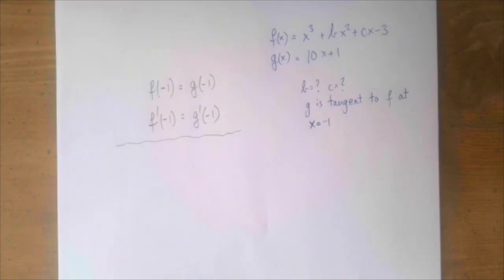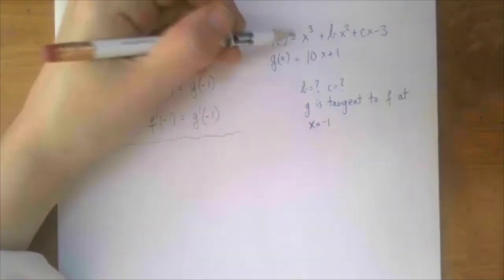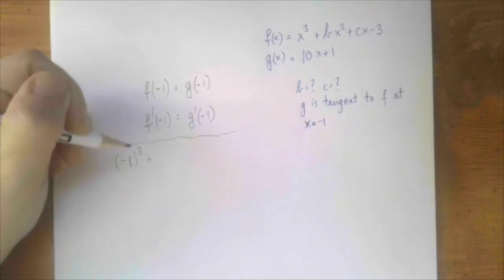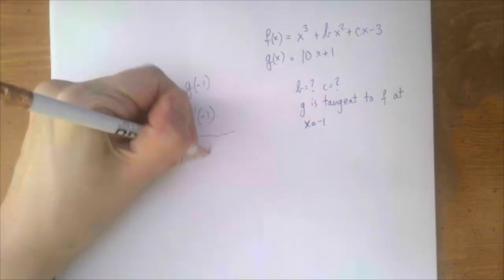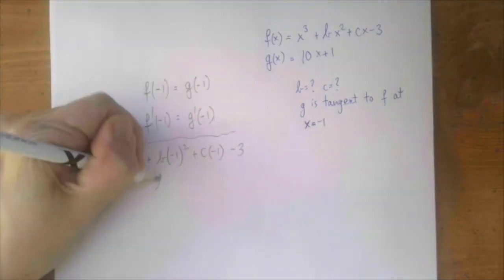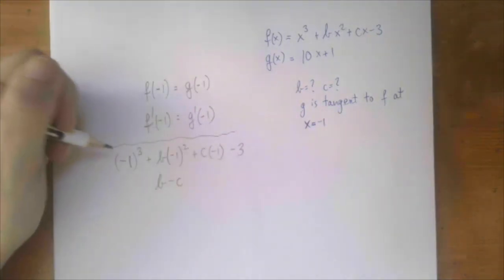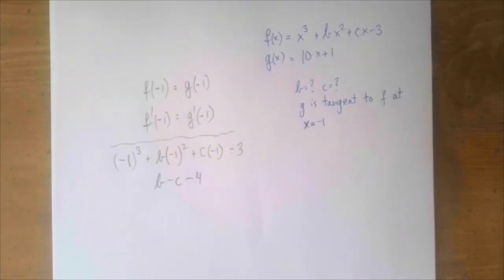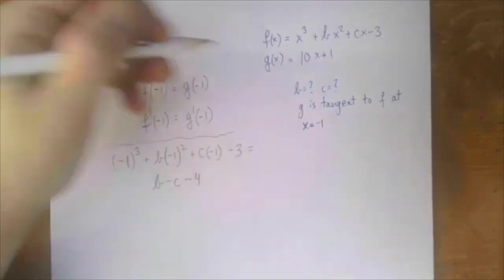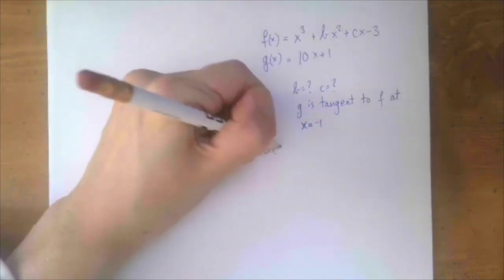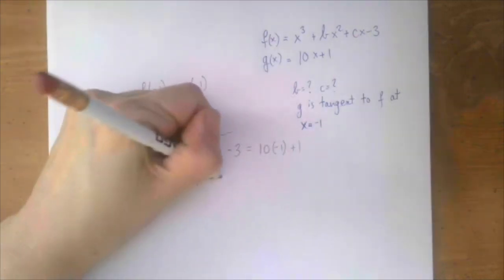f(-1) = (-1)³ + b(-1)² + c(-1) - 3 = b - c - 4, and this should equal g(-1) = 10(-1) + 1 = -9.